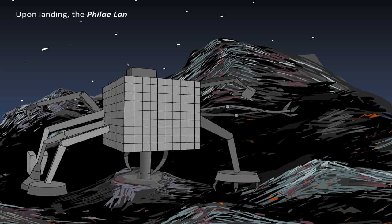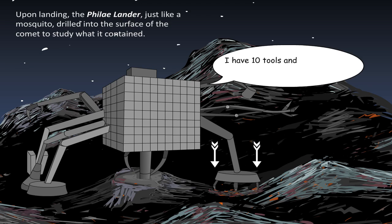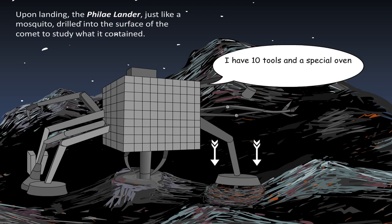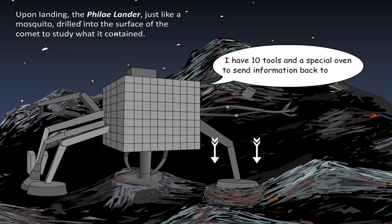Upon landing, the Philae lander, just like a mosquito, drilled into the surface of the comet to study what it contained. 'I have 10 tools and a special oven to send information back to Earth.'